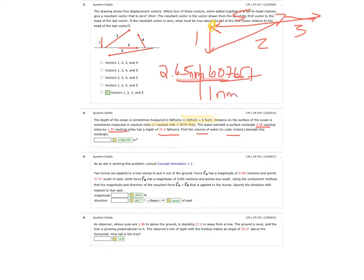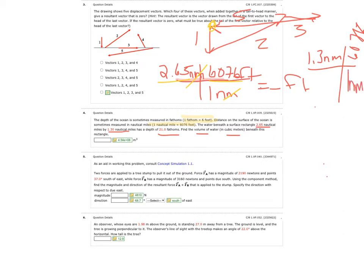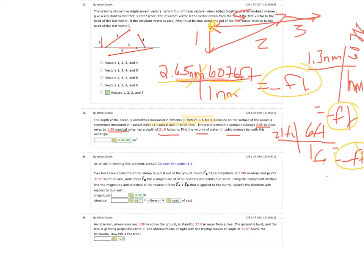The nautical miles cancel and you multiply 2.65 times 6,076. Then do the same for 1.3 nautical miles, multiplying by 6,076 feet per nautical mile to get feet. For the last measurement, it was in fathoms — 21 fathoms — so you multiply by 6 feet per one fathom to get feet as well. Now you have all three measurements in feet.